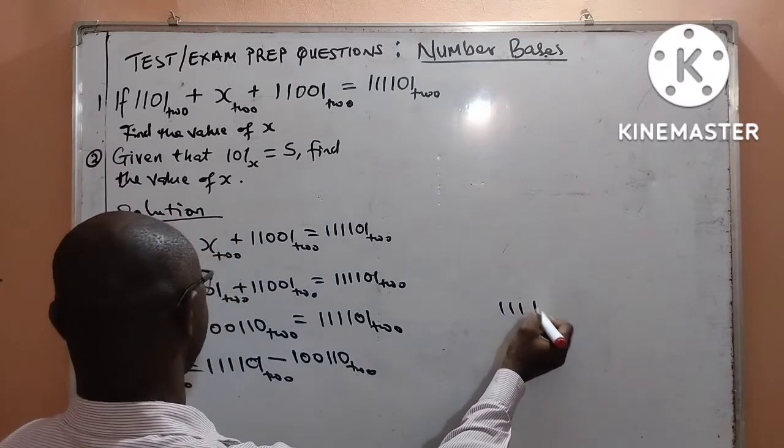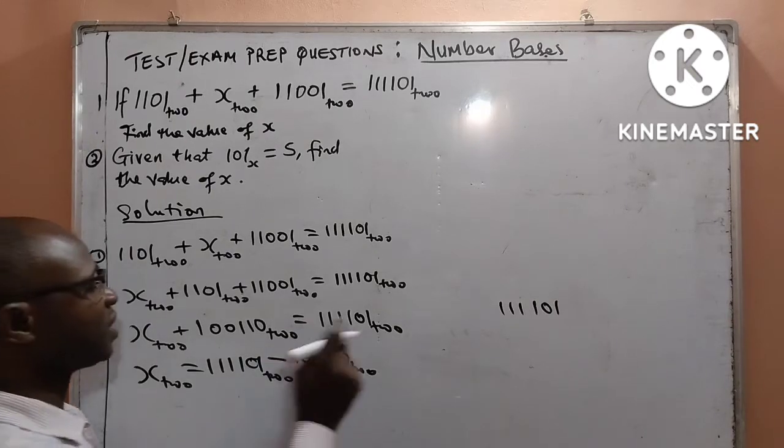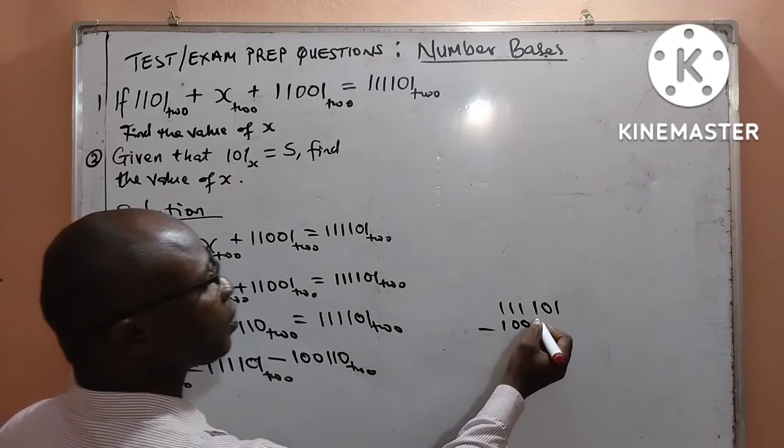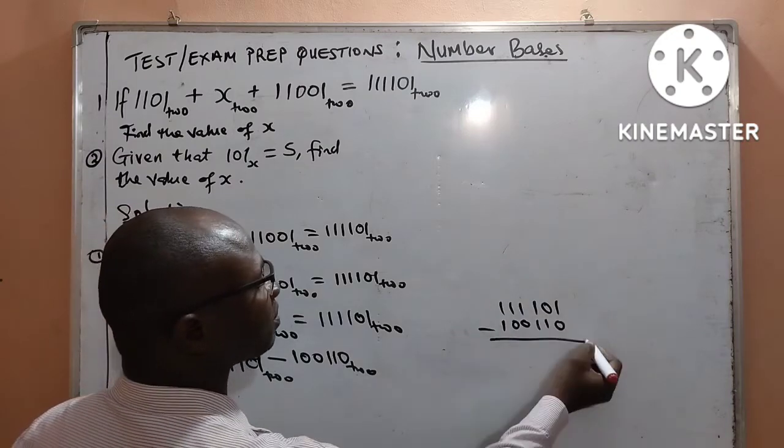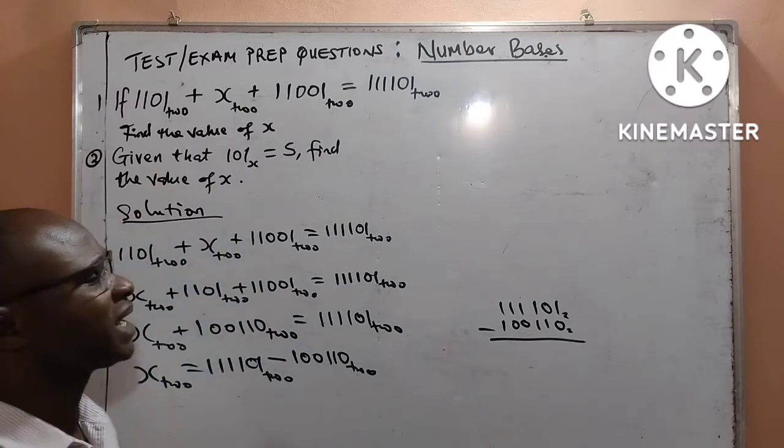111101. That is by the left-hand side. Sorry, by the right-hand side is what I'm doing now. Then, minus 100110. So, I will subtract it all in base 2. Subtracting that, 1 minus 0 will give me 1. I want you to look very well here and see how I can do 0 minus 1.